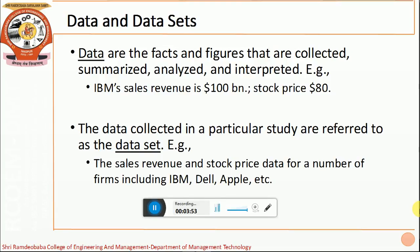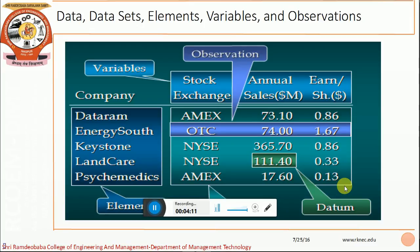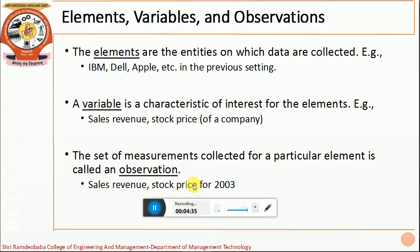The data collected in a particular study are referred to as a data set. For example, if we consider the stock price and sales revenue of various firms like IBM, Dell, and Apple, then the set of values of all the companies put together is called a data set. In the given table, we find several stock exchanges with their respective annual sales and share holdings, which are called data, while the various companies considered are called the data set. The elements are the entities on which the data are collected, and the various companies in the previous example are called elements. A variable is a characteristic of interest which varies for different elements, like sales revenue and stock prices.